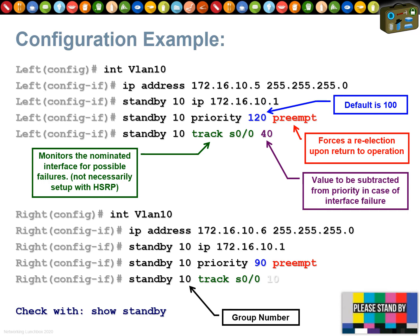The group number is really important. You can have multiple HSRP groups — for example, four routers with two default gateways using group 10 and group 11. The group number also gives you a unique MAC address, which matters because some older Cisco switches don't like the same MAC address appearing on two different VLANs. Best practice is to align VLAN and group numbers: VLAN 10 group 10, VLAN 20 group 20, VLAN 50 group 50. Note that group numbers max out at 255, so for VLAN 500 you'd need to be more creative.